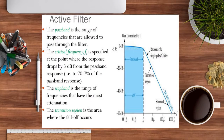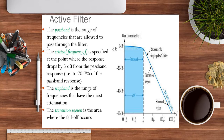The pass band is the range of frequencies allowed to pass. The critical frequency fc is observed on the gain versus cutoff frequency curve. The bandwidth defines the range of frequencies in the pass band. The 3 dB point corresponds to 70.7 percent of the signal. The stop band is the range of frequencies with the most attenuation, and the transition region is where the response changes from the pass band to the stop band.